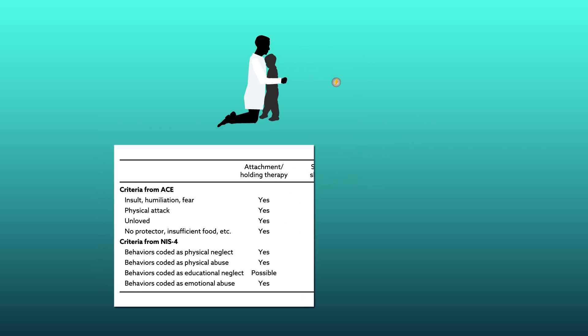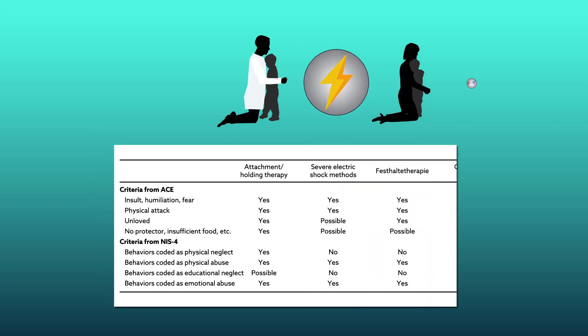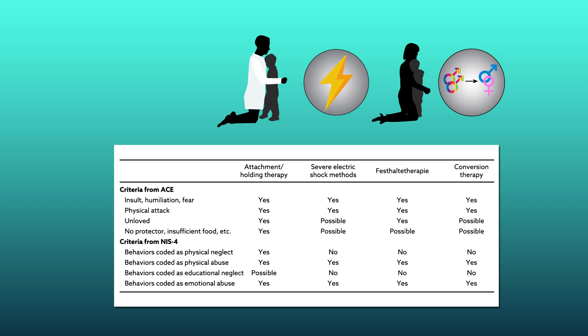Aversive conditioning using electric shock, festalter therapy, and conversion therapy would also be classified as potentially harmful using the proposed criteria.